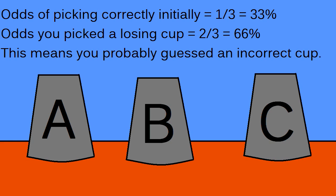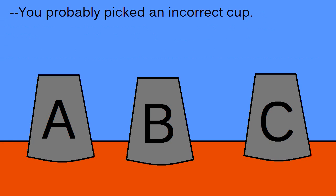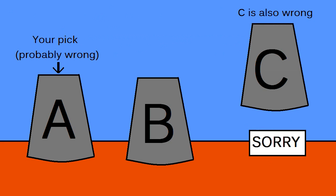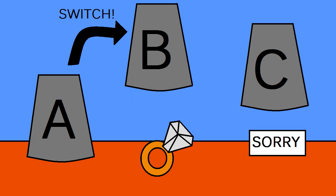So here's what we've got so far. There are 3 cups. On your initial pick, you probably chose a cup that was wrong. The judge then has to show you another incorrect cup before asking if you want to switch or not. When the host reveals to you that cup C is a loser, he has most likely revealed to you the only loser left in the game. This means that you should always switch cups.